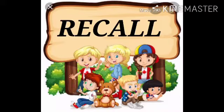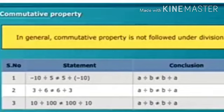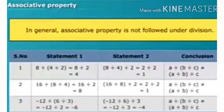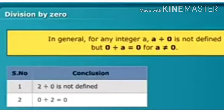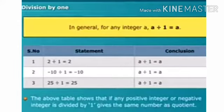Let us recall the properties once again: closure property, commutative property, and associative property do not hold for the operation of division. Division by 0: for any integer a, a divided by 0 is not defined, but 0 divided by a equals 0 for a not equal to 0. Division by 1: for any integer a, a divided by 1 equals a.